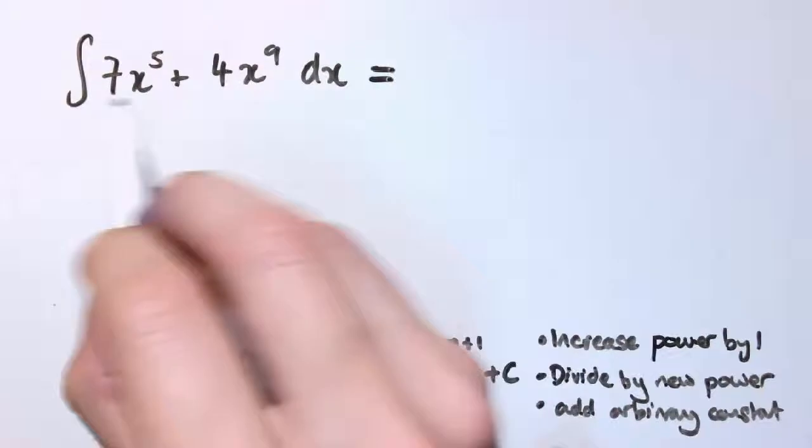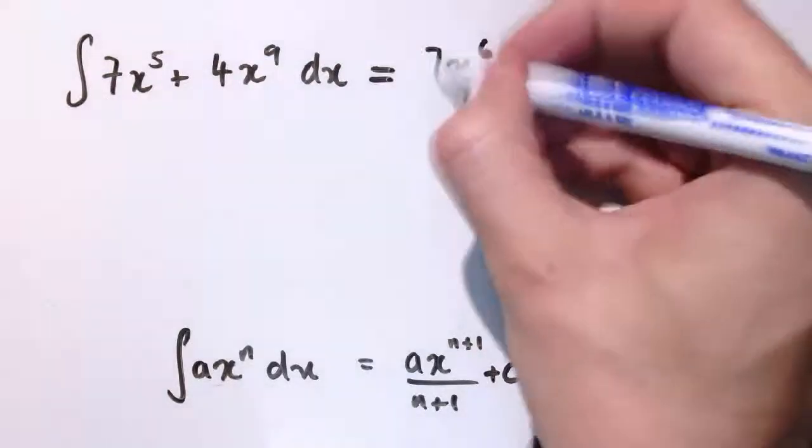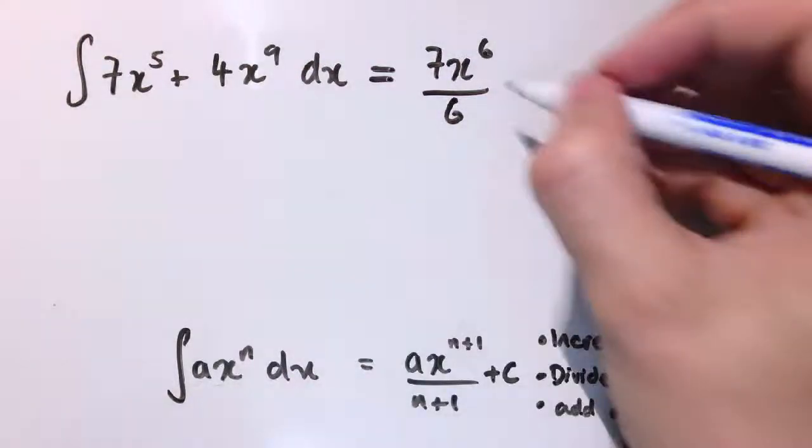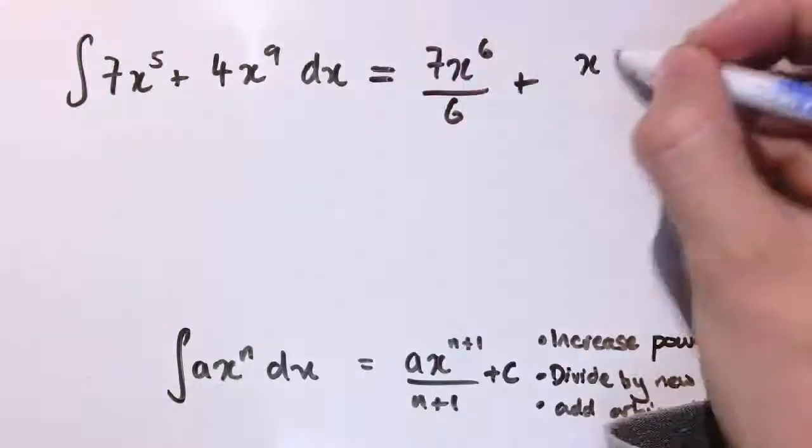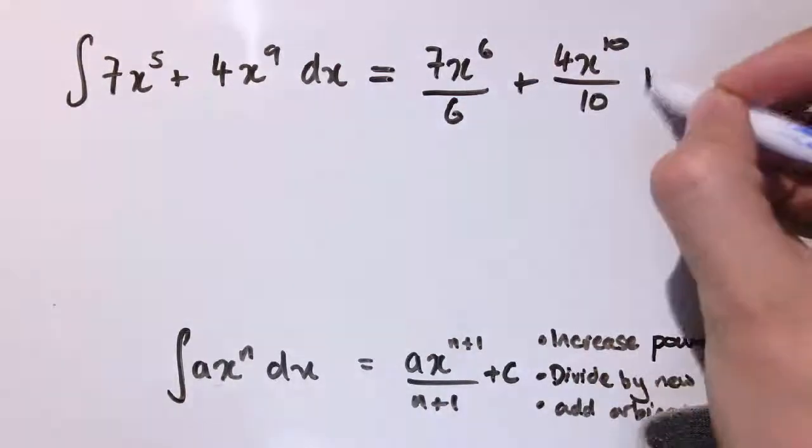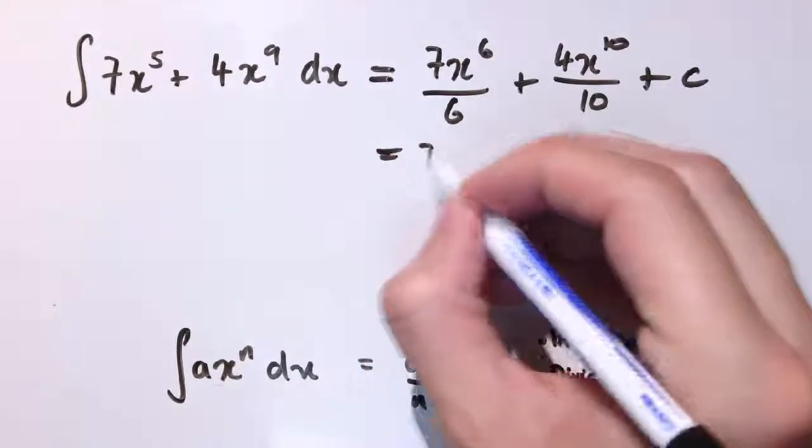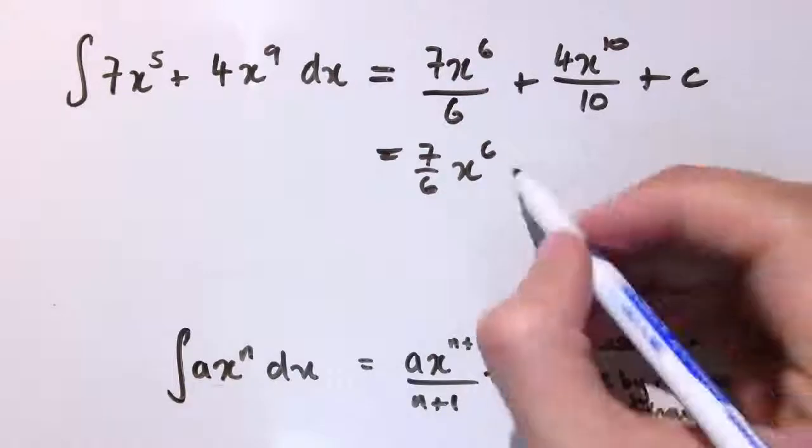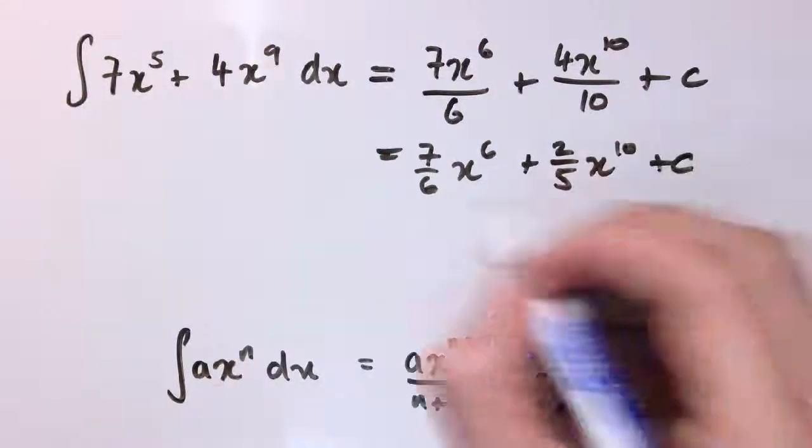So I can take each of these functions. For 7x to the 5, I'm going to increase the power to 6, keep my 7, and divide by the new power which is 6. Then for the next one, increase the power by 1 to 10 and divide by the new power which is 10, and add on my arbitrary constant. Simplifying, 4 over 10 becomes 2 fifths, and there we go, that's our final answer.